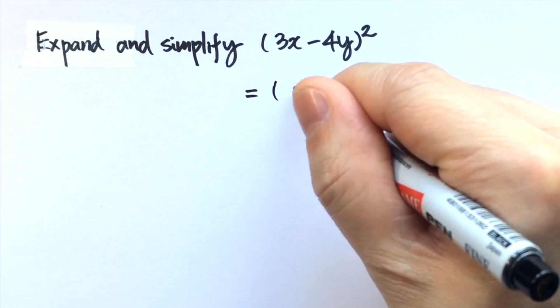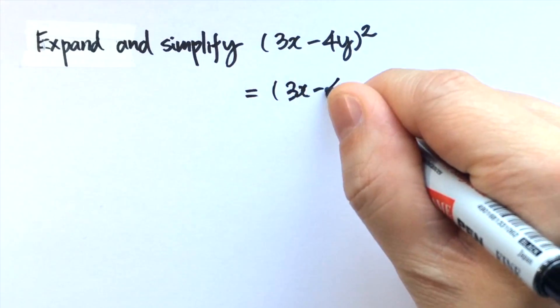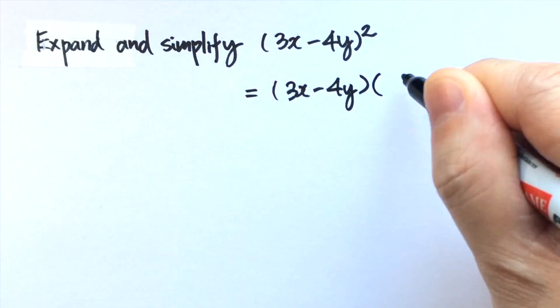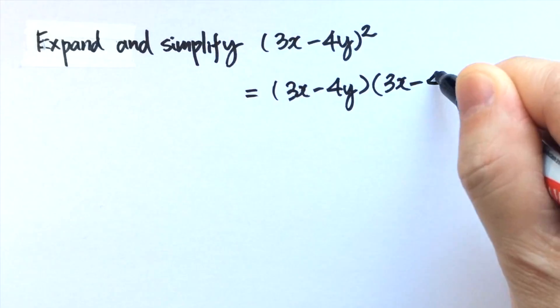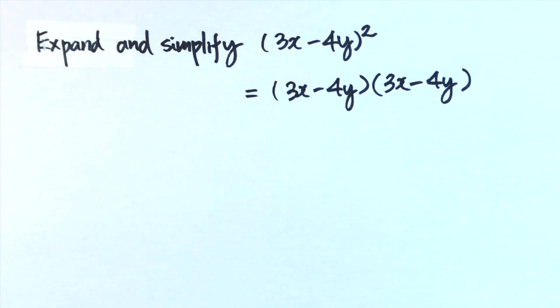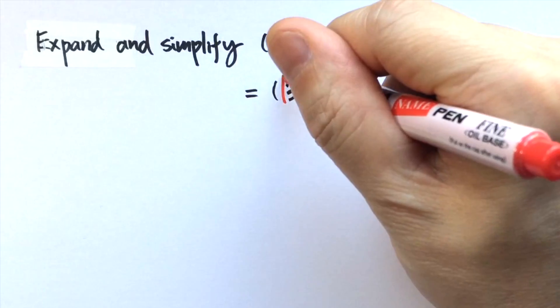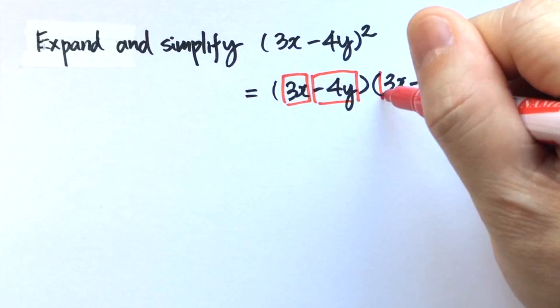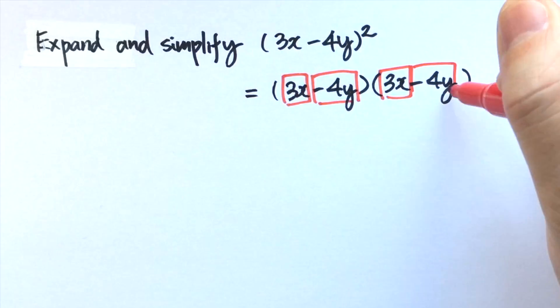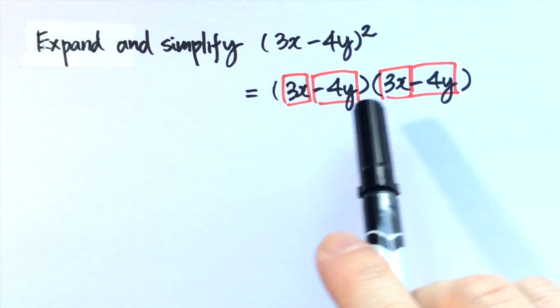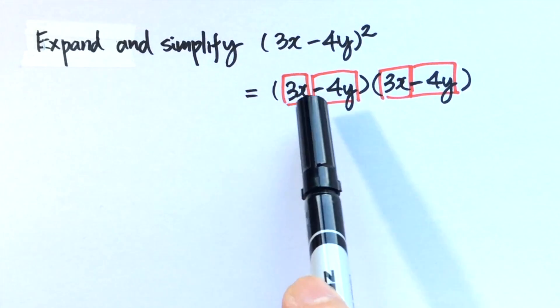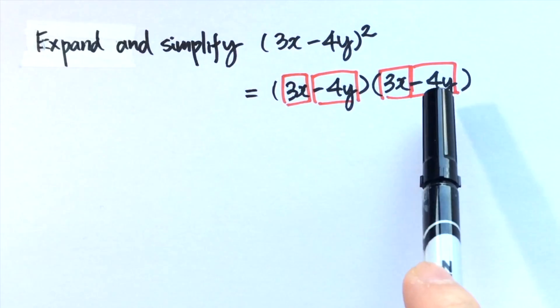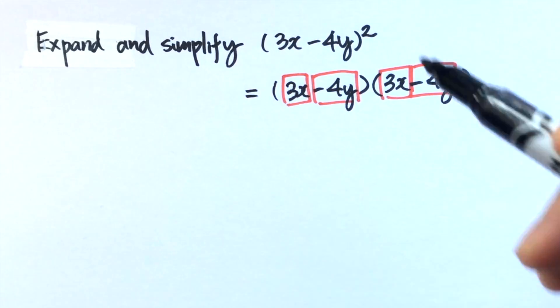What do we mean by square? That means the binomial 3x minus 4y multiplied with itself for two times. Then we can simplify or expand the expression, but the first thing to do is to chunk the binomial into two separate terms: 3x minus 4y times 3x minus 4y. Now we can apply the distributive law.